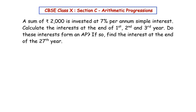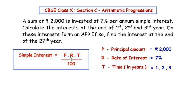Let us begin by writing the formula for simple interest: SI = (P × R × T) / 100, where P is the principal amount — rupees 2000 in this case — R is the rate of interest, which is 7%, so R/100 represents 7%, and T represents the time in years.